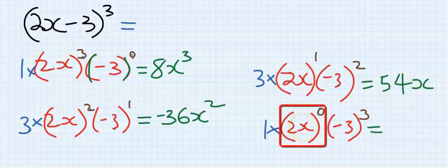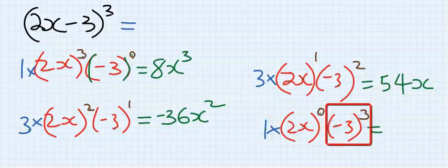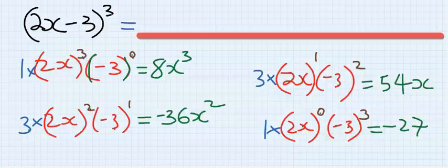Since the power is 0, this becomes 1. The coefficient times 1 is 1. Minus 3 cubed gives minus 27. We have all our answers.